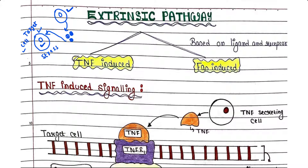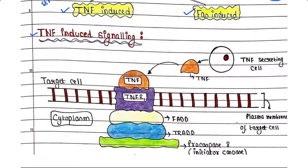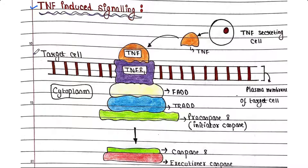The extrinsic pathway occurs via two signaling processes: one is TNF-induced and the other is FAS-induced, based on the ligand and receptor involved. First, we will talk about TNF-induced signaling. Here we can see the target cell and its plasma membrane — this cell is suffering from a particular stress.